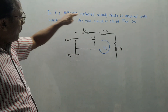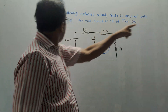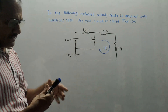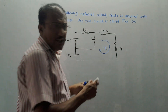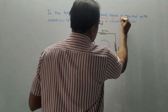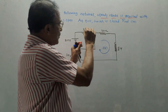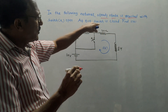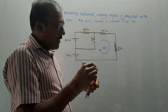The problem is: in the following network, steady state is reached with switch K open. It is mentioned that steady state is reached when switch K is open. At t equals 0, switch is closed. Find I of t.